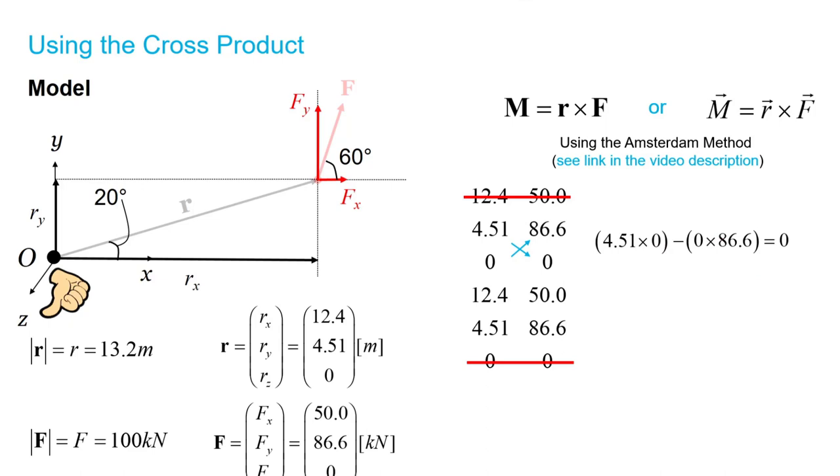But now we can move down one row and we get 0 times 50 minus 12.4 times 0, which indeed gives us 0 again. And the final row, we get 12.4 times 86.6 minus 4.51 times 50, which will be equal to 848.